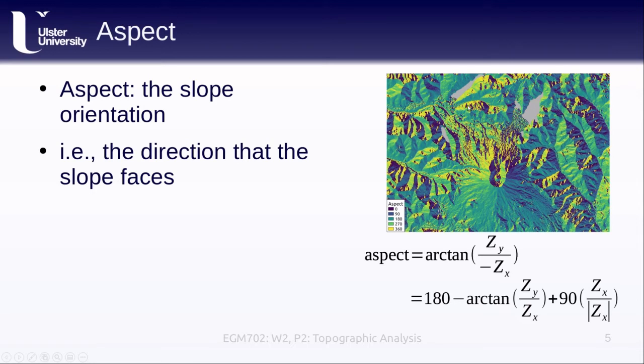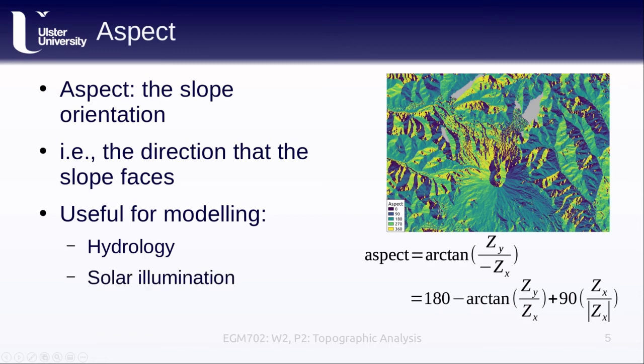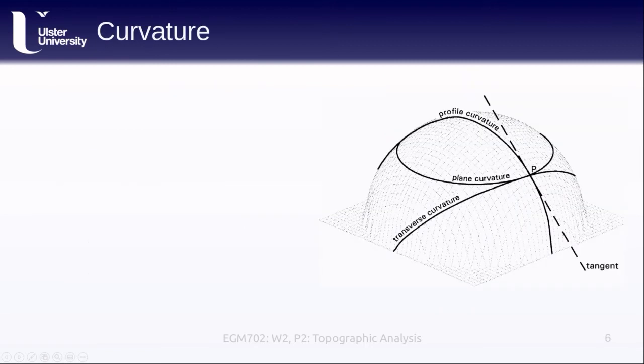This is something that is very useful for different modeling approaches that we might encounter in environmental or geosciences. For example, it's quite useful for hydrology, also modeling things like solar illumination. This is something that you might encounter more frequently than not, and we'll actually talk a little bit more about using aspect to help co-register DEMs at the end of the lessons for this week.